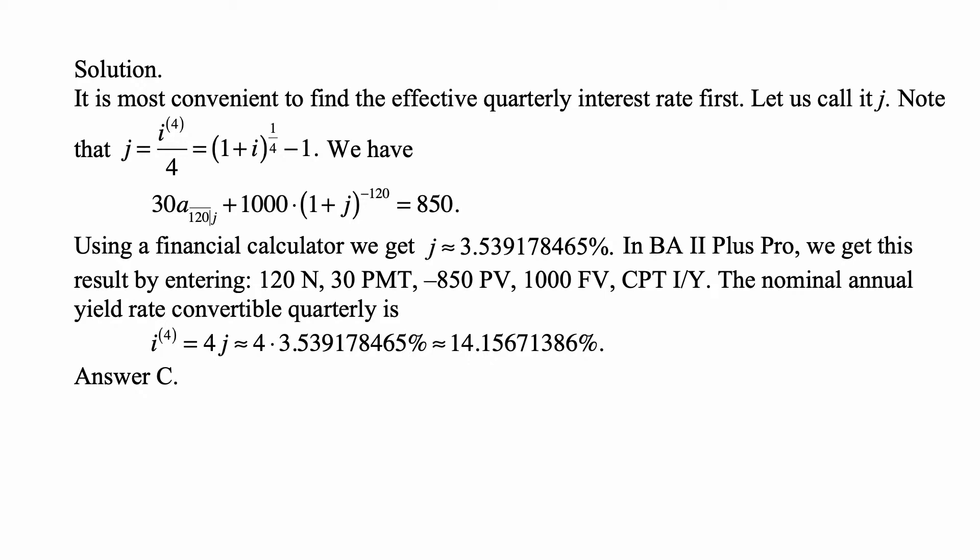So call that effective quarterly interest rate j, and j is equal to i^(4) over 4, but that's the same as (1 + i)^(1/4) - 1. Because (1 + i^(4)/4)^4 is equal to 1 + i. So we have this information in the problem: